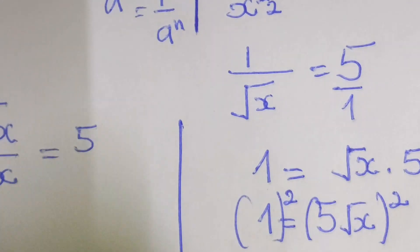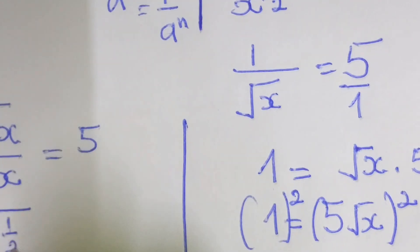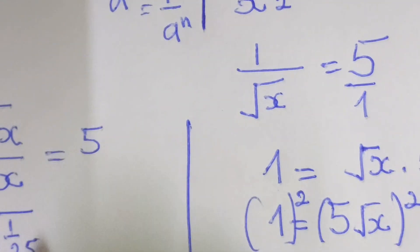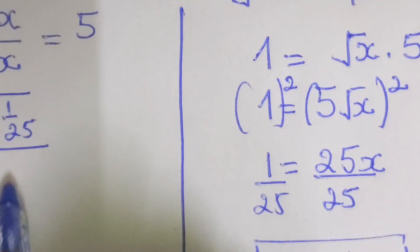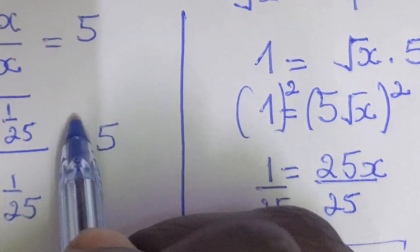And we know x is 1 over 25, we shall say square root of 1 over 25 over 1 over 25 equal to 5, question mark.